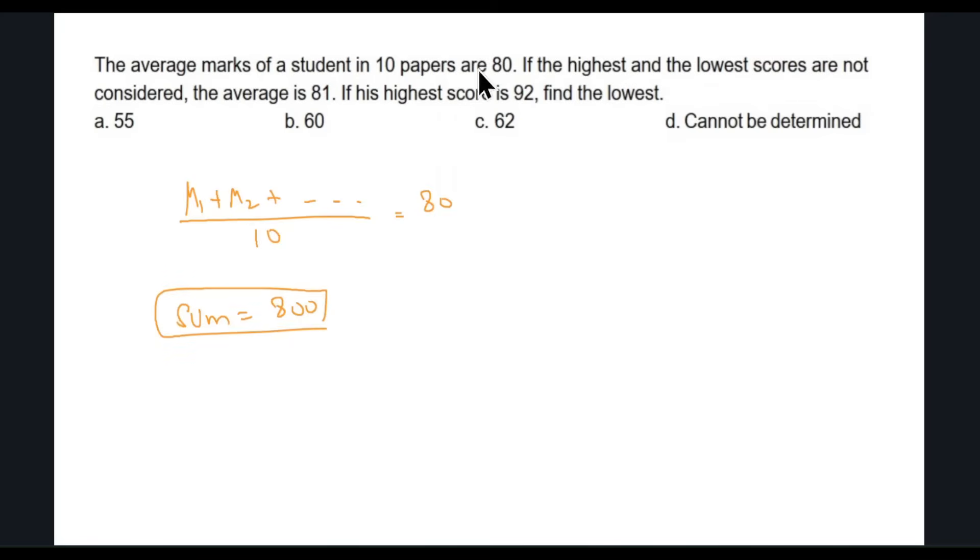They're saying that if the highest and lowest scores are not considered, then the average is 81. I don't know what is the highest and lowest, but definitely the sum can be written as highest plus lowest plus remaining, and that equals 800.